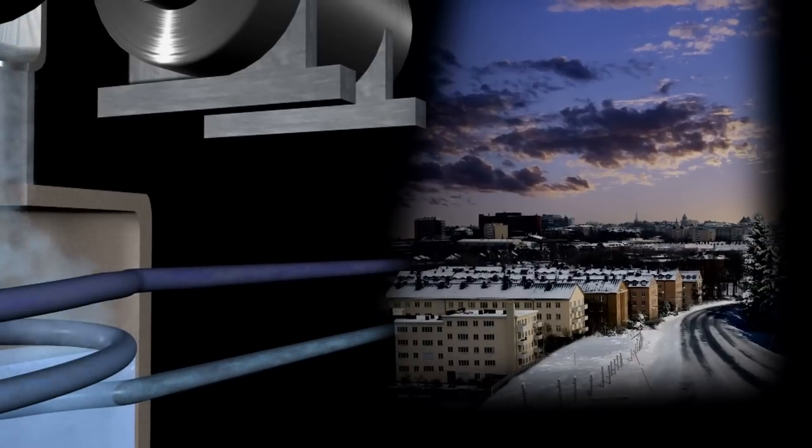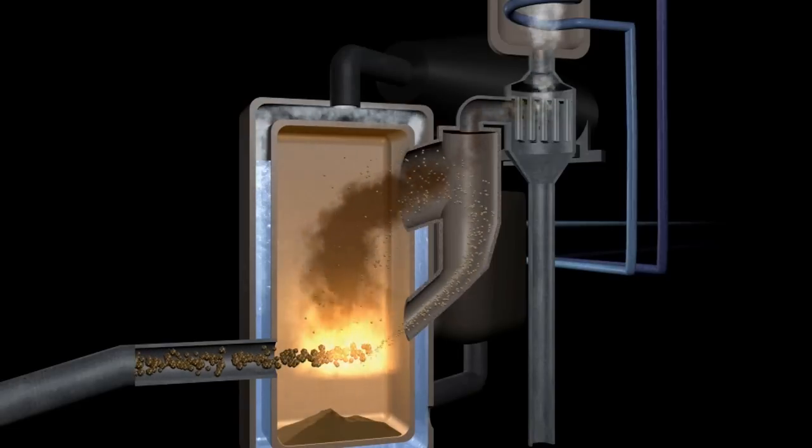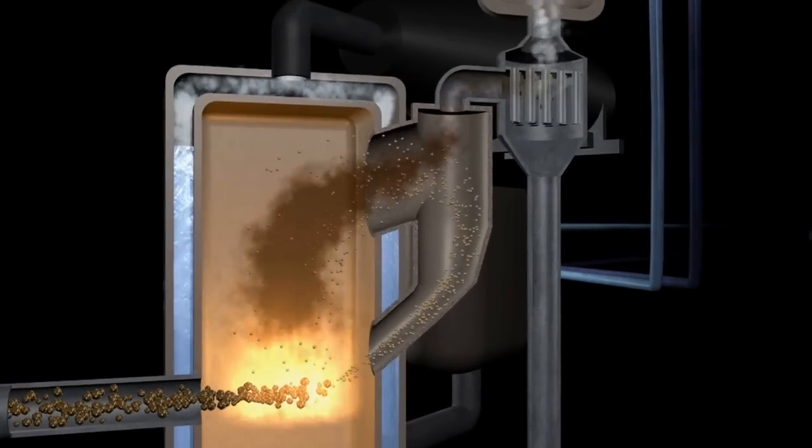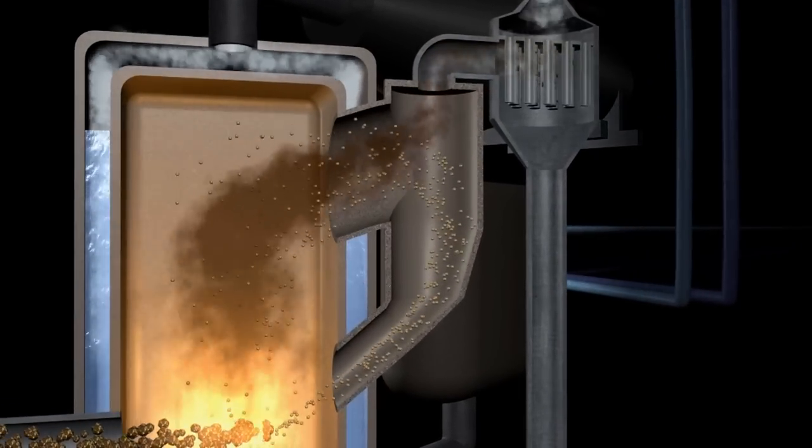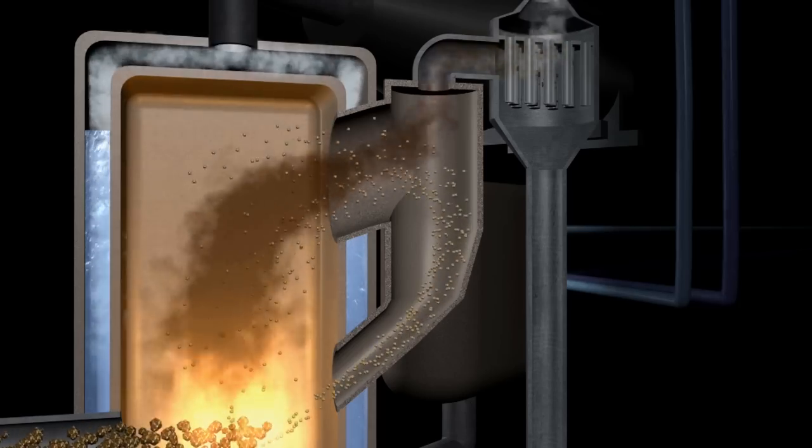But that's not all. Smoke from the furnace is exhausted via a cyclone separator that returns the hot floating sand to the furnace and the remaining smoke to a gas filter.